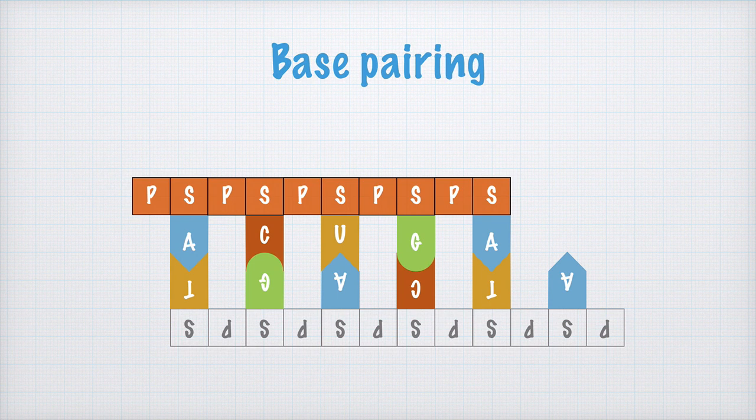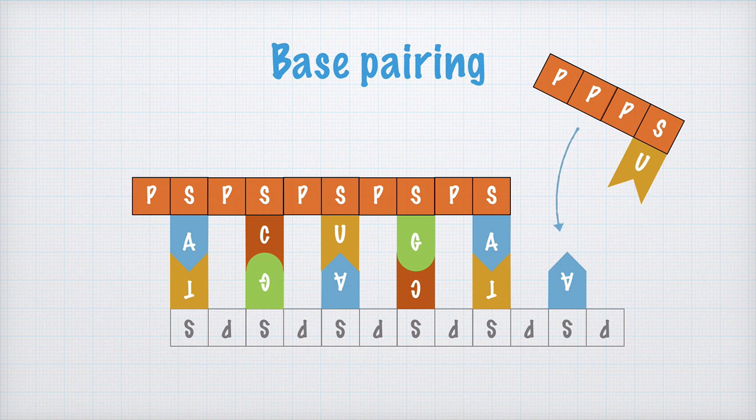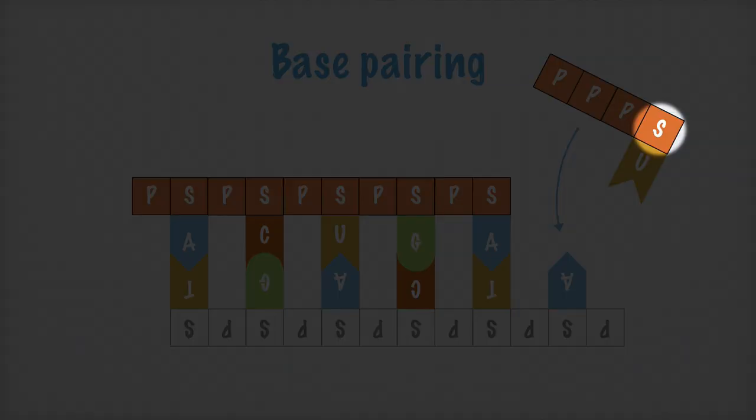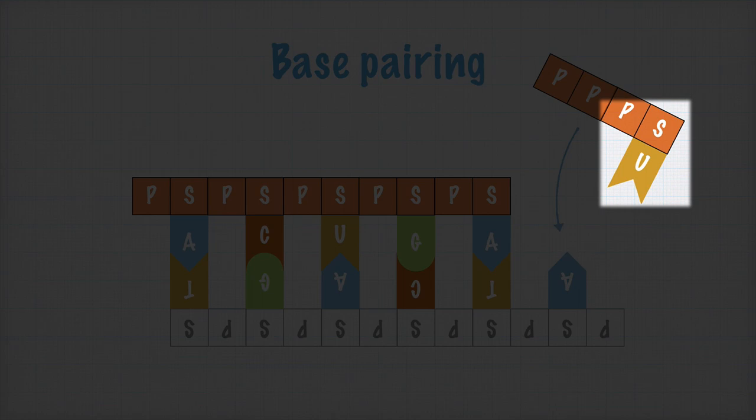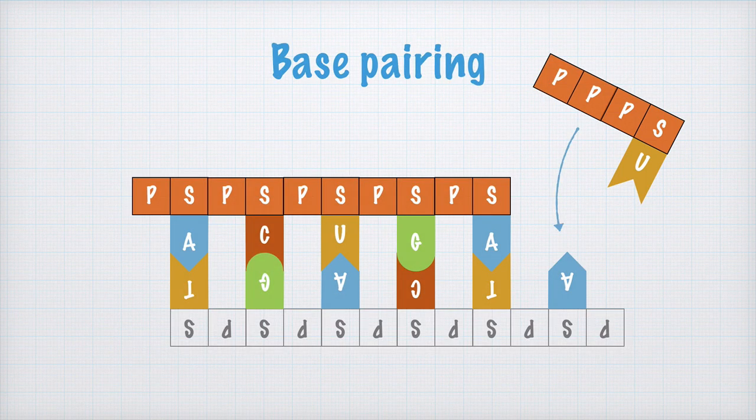So what happens during transcription? Well, here we have a nucleotide that fits with the A down here. The nucleotide consists of a sugar residue with an attached nucleobase, in this case uracil or U, and three phosphate groups. You go ahead and copy this image too, because now there will be some animations.